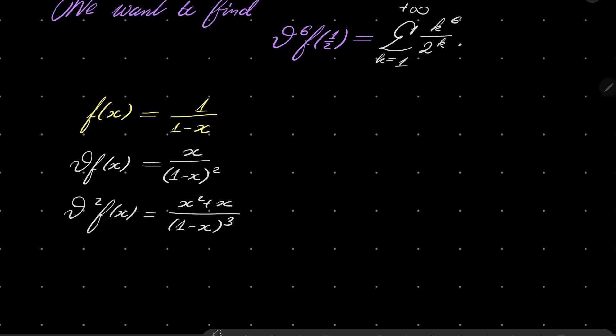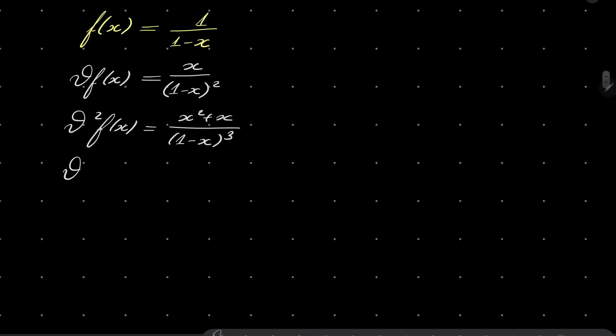Basically what's happening, for example to get theta squared from theta, I differentiate this expression using the quotient rule and then I multiply it by x to get this result. I leave the details to you because differentiation is boring.